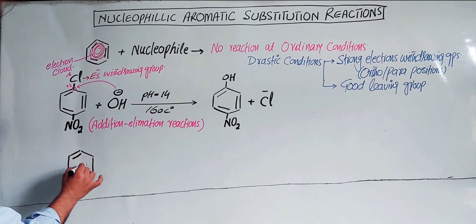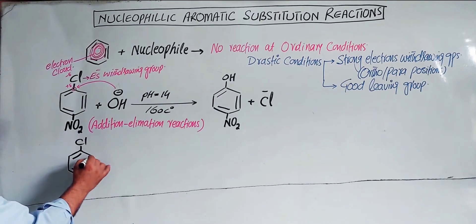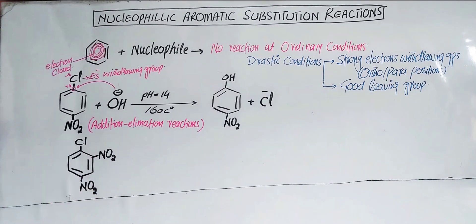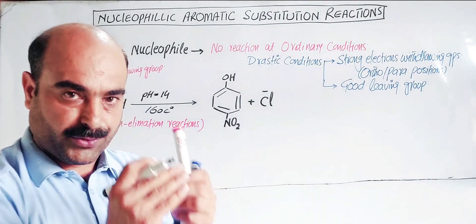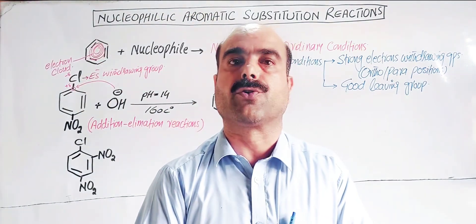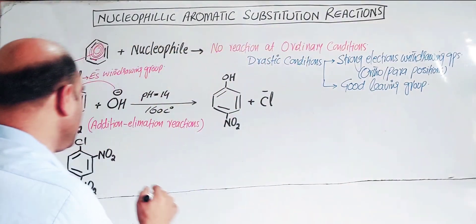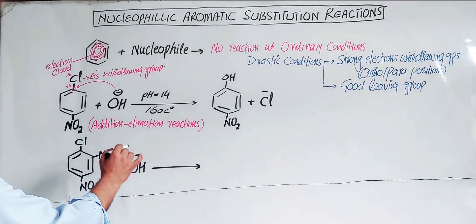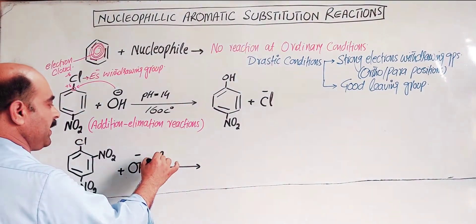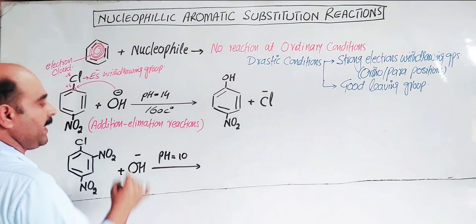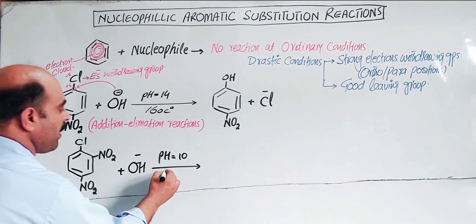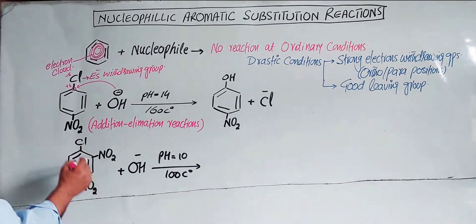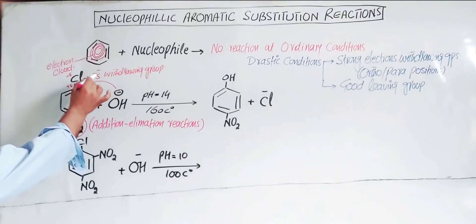The second condition is when two electron-withdrawing groups are connected to the benzene ring. These groups draw electrons strongly, creating a positive center. Under these conditions — pH 7 and temperature around 100°C — the nucleophile can attack. The electron-withdrawing groups are good at directing the nucleophile to the correct position.